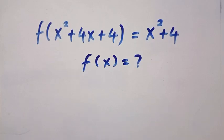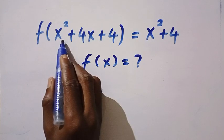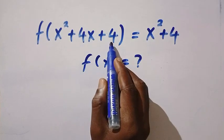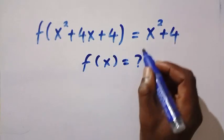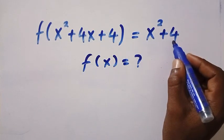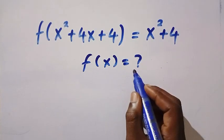Good day viewers, you are welcome. How to solve these nice functional equations? We are given f of x squared plus 4x plus 4 equals x squared plus 4. And what is f of x?